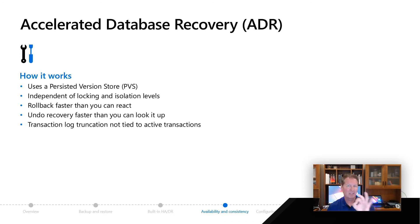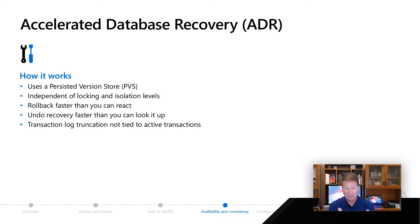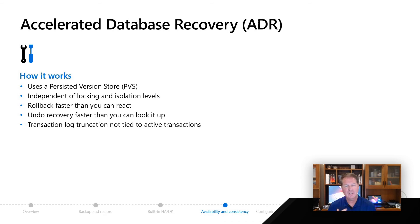We use something called a persistent version store in your database. It's a bit like the versioning we have today for isolation in TempDB, but different — similar concepts, implemented differently. It's implemented not for versioning for isolation levels but for recovery purposes. It's a version store in your database, independent of isolation levels, so you can still do things like read committed isolation. When this is on, rollback happens at the snap of your fingers, undo recovery happens extremely fast, and transaction log truncation is not tied to active transactions. All of these are very important for built-in availability in the cloud.